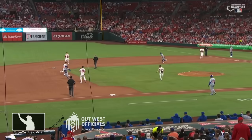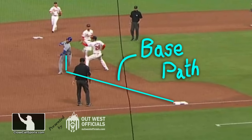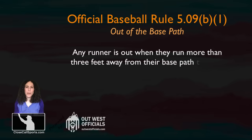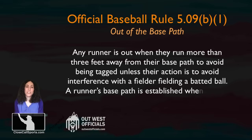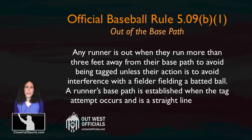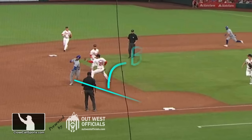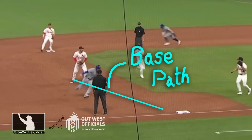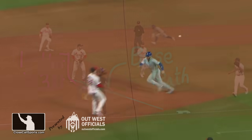Let's cue up the only camera angle that shows both the runner and the base at the time the base path is drawn. If at any point the runner runs more than three feet away to avoid a tag — even though he's already by the fielder — he is out of the base path. That's really difficult to tell from this angle. I cannot make that call from here.